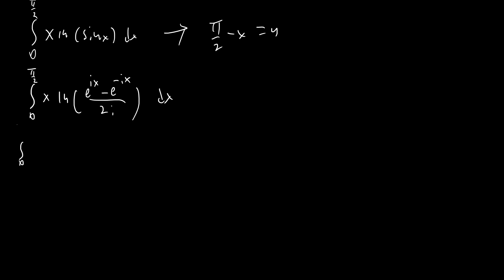We're going to get the integral from 0 to π/2 of ln(1/i), which is just −iπ/2, times x dx. And we know that whatever contribution this integral has, it's not going to matter — it will be canceled out because this is purely imaginary. So we don't need to worry about this at all. We do need to worry about the negative integral from 0 to π/2 of ln(2) times x dx, as that's going to contribute part of the integral.